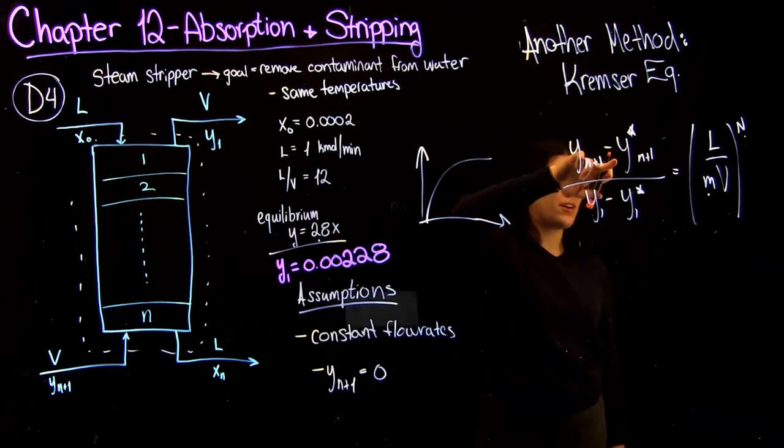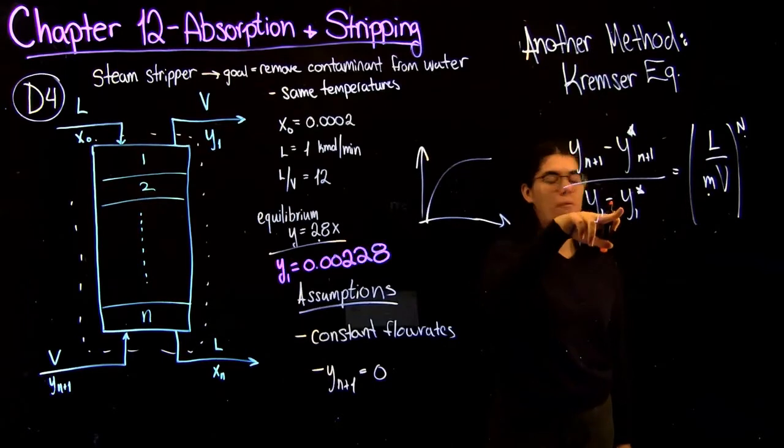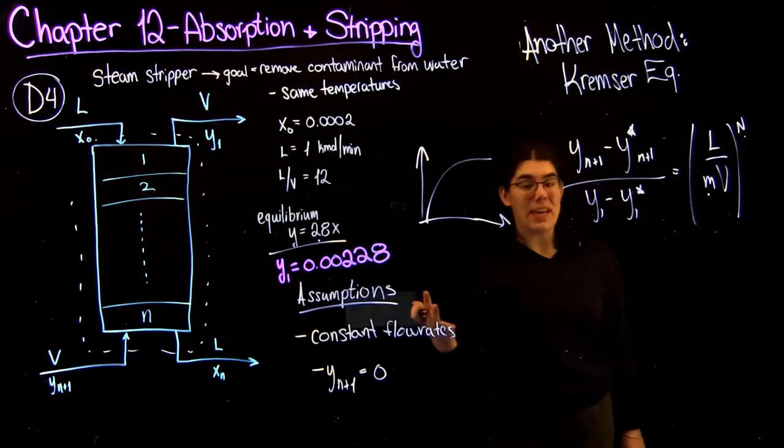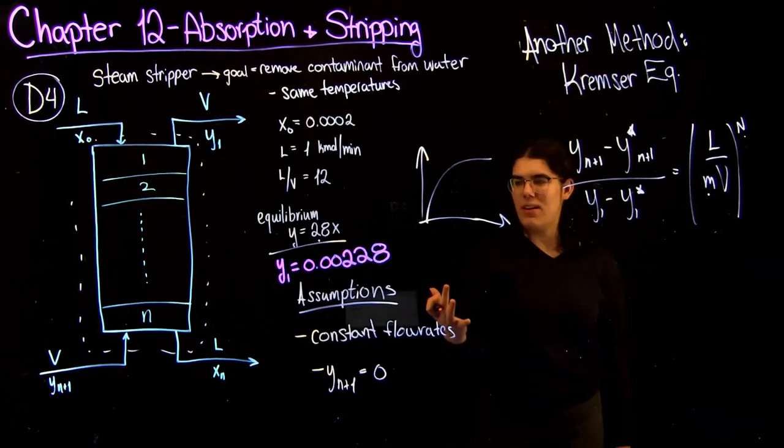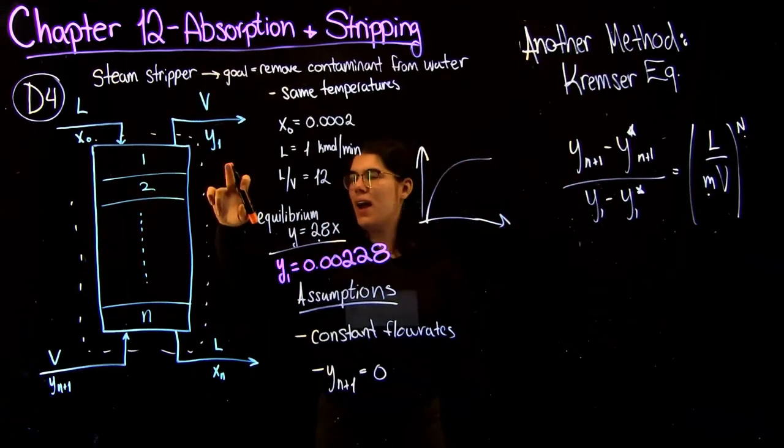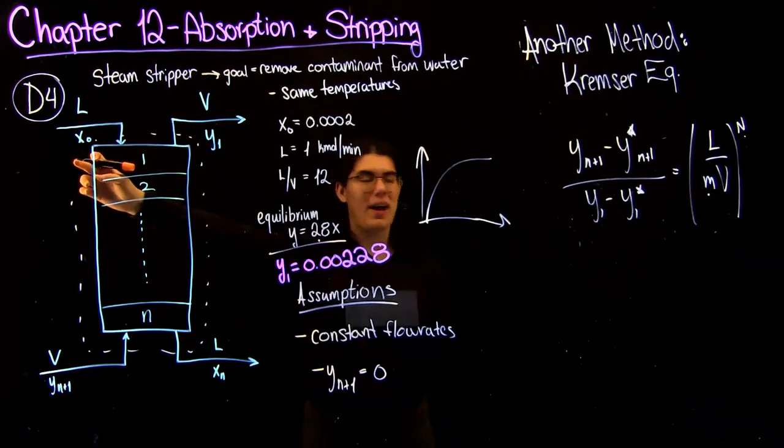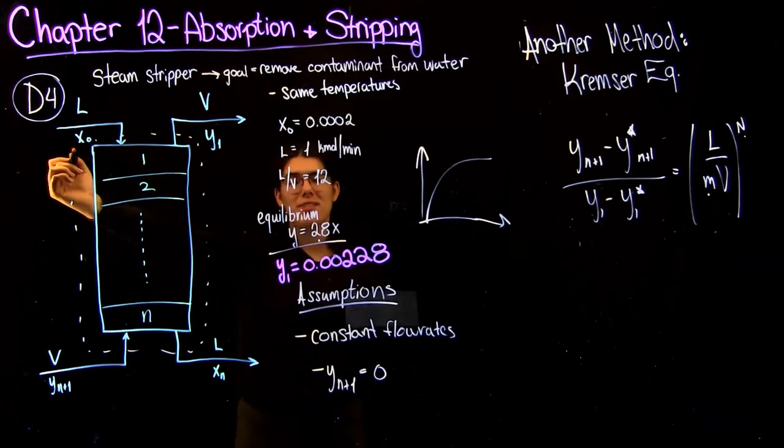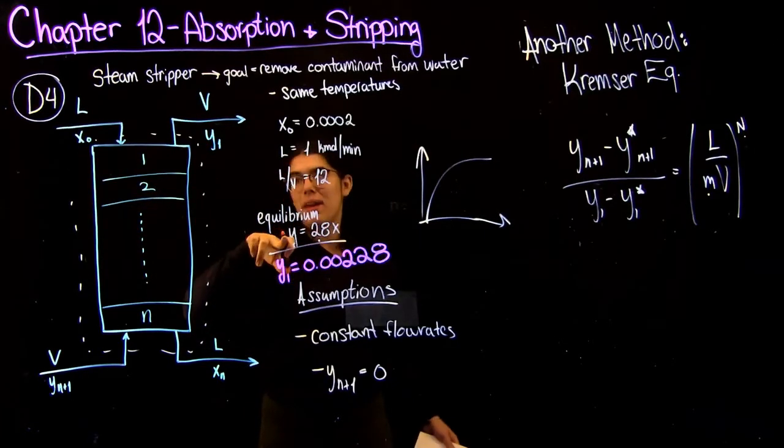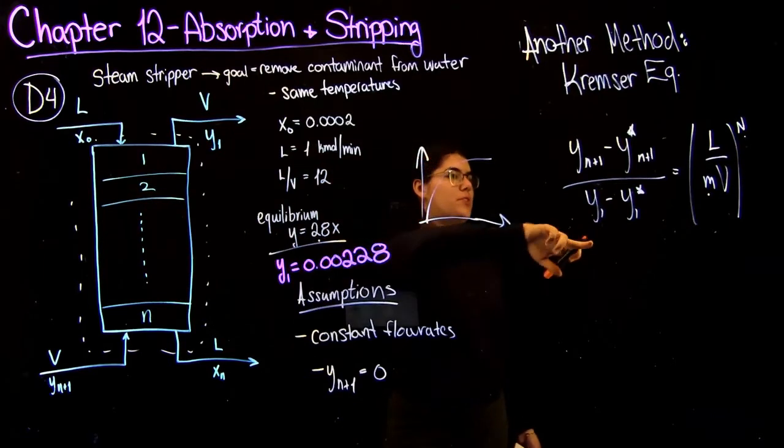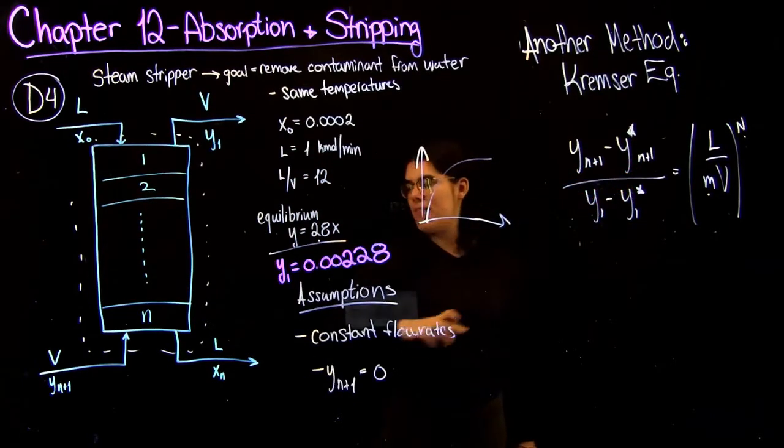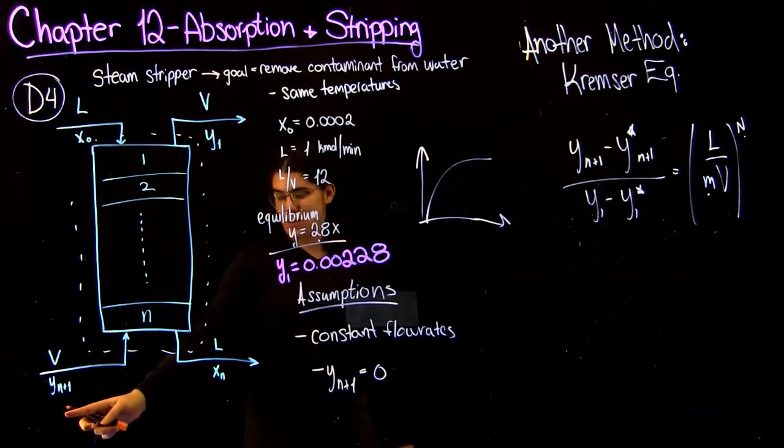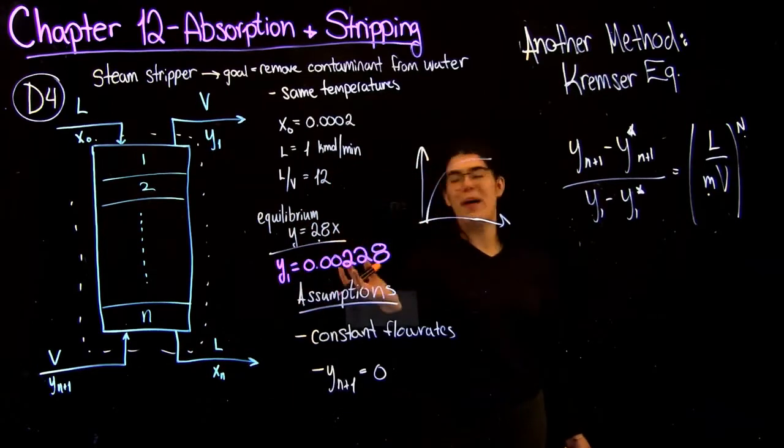So that just leaves what are y stars for y star n plus 1 and y1 star. So what the star just means is what is the equilibrium composition there? So y1 corresponds to x0. So what y1 star is, is if you were to plug x0 into this equilibrium equation, that would be equal to y1 star. So the same thing for y n plus 1 star. If you have xn and you plug it into this equilibrium equation, you get y star n plus 1.